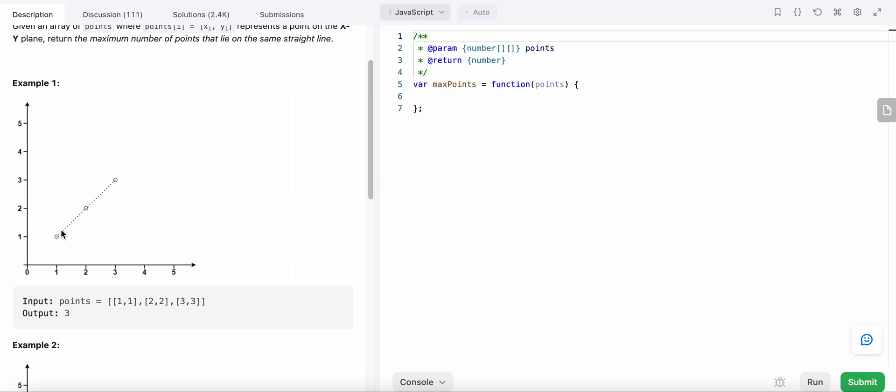Since we know that this forms a straight line and all three points lie on the same straight line, the value here is equal to 3. Now the problem is: how can we find or